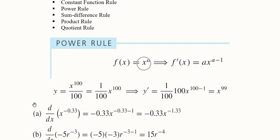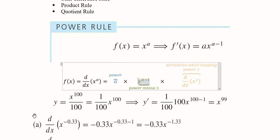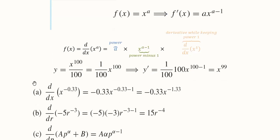The third part of the formula is the derivative of x while keeping its power as one, which is d/dx of x. This equals one and cancels out, so it does not affect the expression. These three steps are required to find the derivative of any power function, where the variable has a certain power.